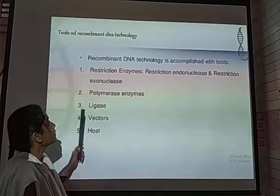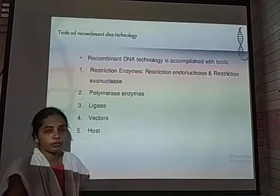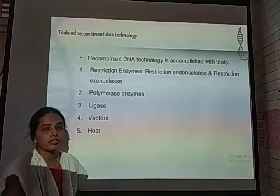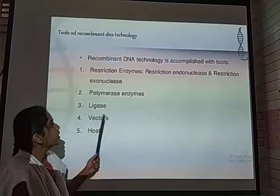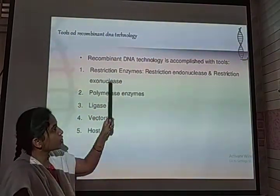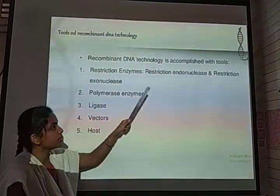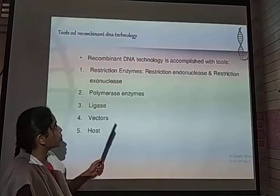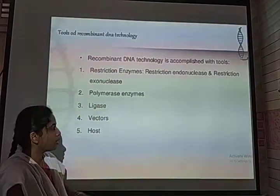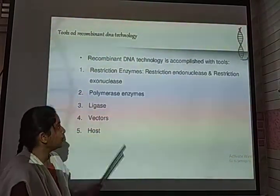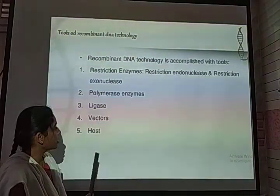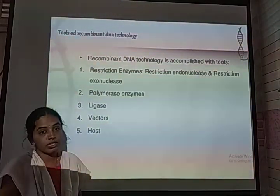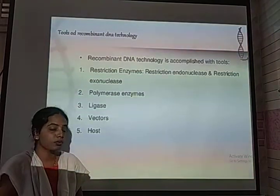Recombinant DNA technology is accomplished with the help of specific tools. These include restriction enzymes, which consist of endonucleases and exonucleases; polymerase enzyme; ligase; vectors; and host. Along with this, another necessary tool is called a bioreactor, helpful for the extraction of our products.